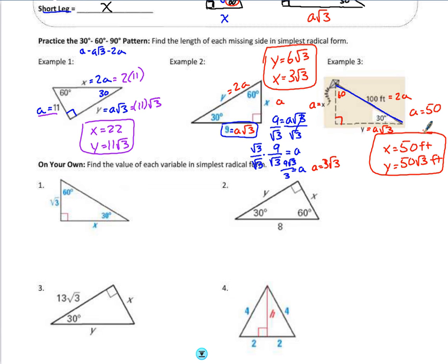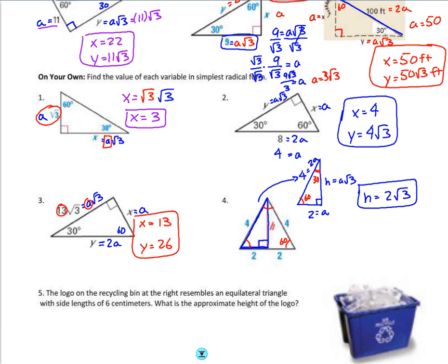So looking at those three examples, go ahead and try the four problems below on your own. Make sure you label your pattern, and then solve for the variable missing. Once you're done with those four, then you can check with what I put up here on the video as the key.